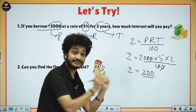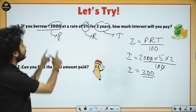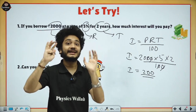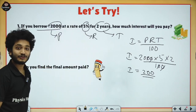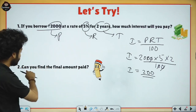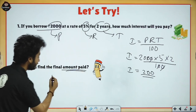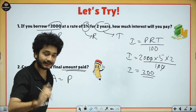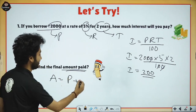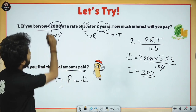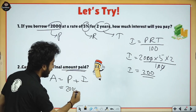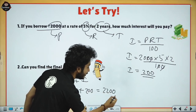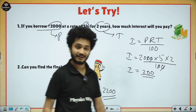200 is the interest — that extra amount. But the principal was 2000. So 200 is asked extra, making the total 2200. This total is called the Amount. Final Amount = Principal + Interest. P was 2000 and interest was 200, so total amount is 2200.